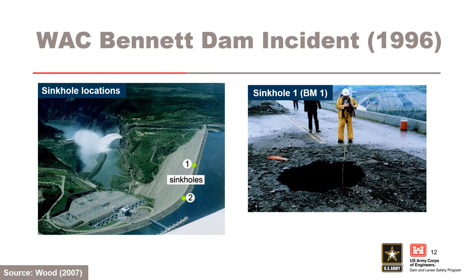BC Hydro's WAC Bennett Dam is a 182-meter-high, 2-kilometer-long zoned earth-fill embankment dam located on the Peace River in northeastern British Columbia that retains the very large Williston Reservoir. The dam was constructed almost entirely of well-compacted glacial moraines, sorted and blended to form core, transition, filter, and shell zones. In 1996, after 28 years of reliable operation, two sinkholes emerged on and upstream of the dam crest. Investigations revealed that the core materials beneath the sinkholes were heavily disturbed down to bedrock, indicating that silty and widely graded soils may be susceptible to internal erosion. The sinkhole at the crest measured 2.5 meters in diameter and was 7 meters deep.